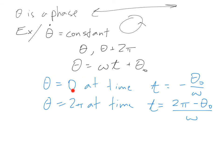Theta goes through zero at time negative theta naught over omega, and theta reaches 2 pi at time 2 pi over omega minus theta naught over omega.